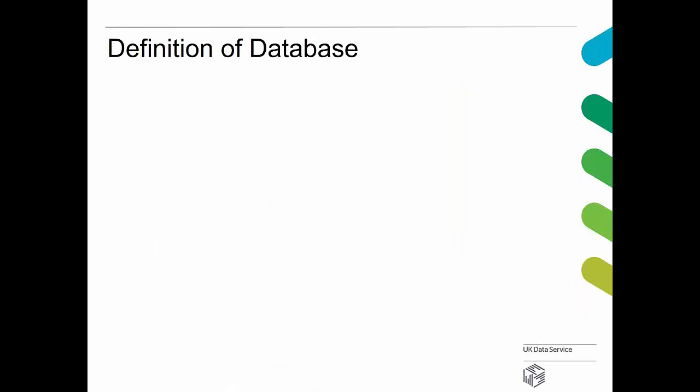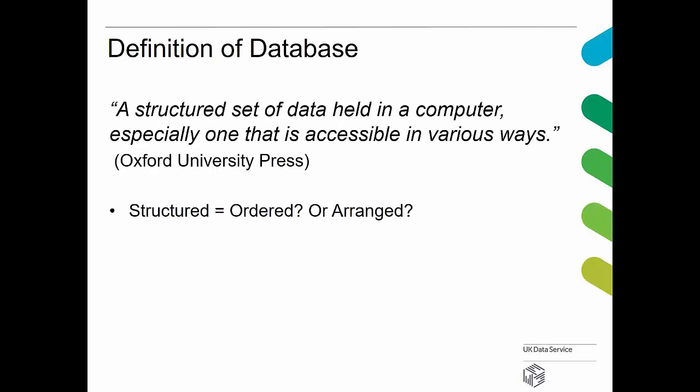So, what is a database? The definition taken from Oxford University Press: a structured set of data held in a computer, especially one that is accessible in many ways. The key point here is 'structured' — what do we mean by that? It's open to interpretation, and different database organisations will have their different views on what structured means, as we'll come across later on.